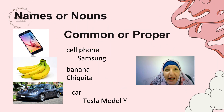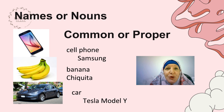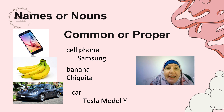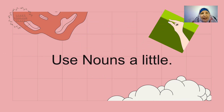Nouns can be common nouns, like phone, bananas, or car, or they can be proper nouns. Proper nouns are usually the brand name or the name of things — like I am Teacher Kay. So a cell phone could be a Samsung, bananas could be Chiquita, and a car could be the Tesla Model Y. When speaking or writing, we only use proper nouns, or even common nouns, only a little.